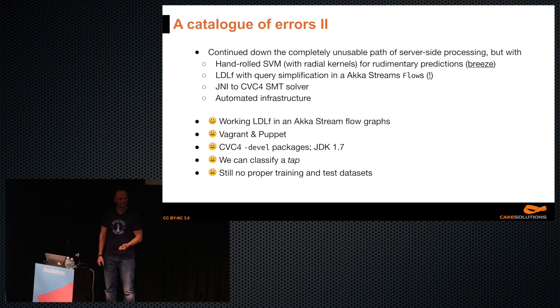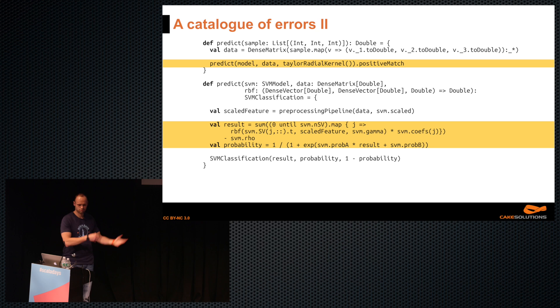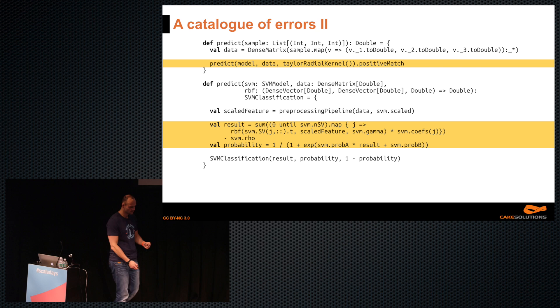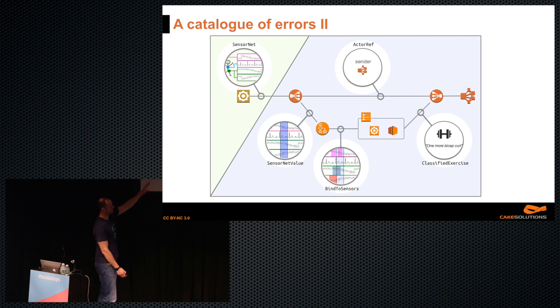We had working dynamic logic over finite traces in an Akka stream, Vagrant and Puppet for automated infrastructure. Unfortunately we depended on CVC4 development packages and JDK 1.7, and all that glorious setup — the only thing we could detect was a tap. We had no proper training and test data sets. We used the Taylor expansion of the RBF kernel for prediction, and this complicated dynamic logic setup, but we just didn't know any better.